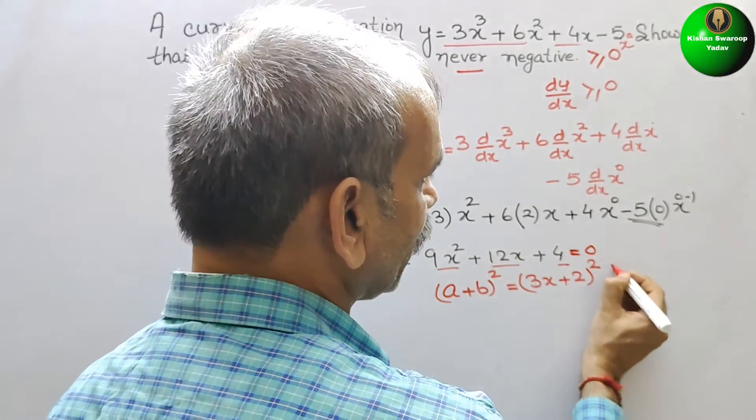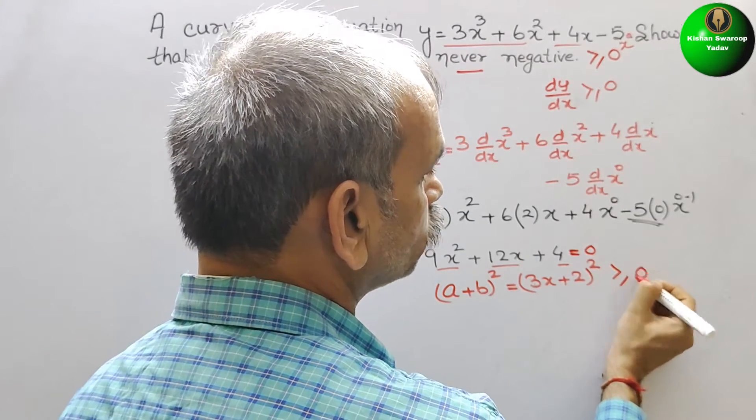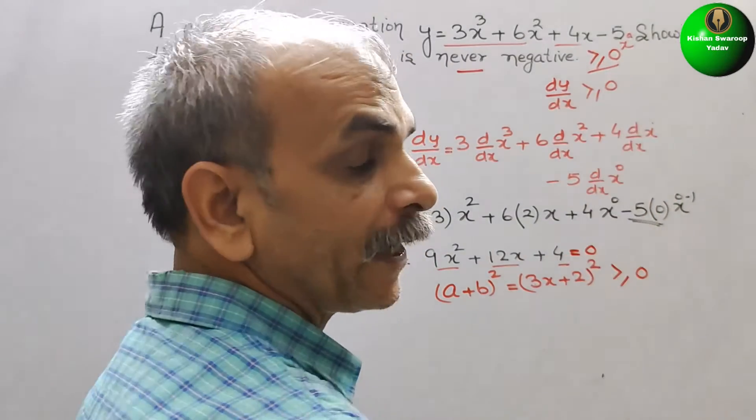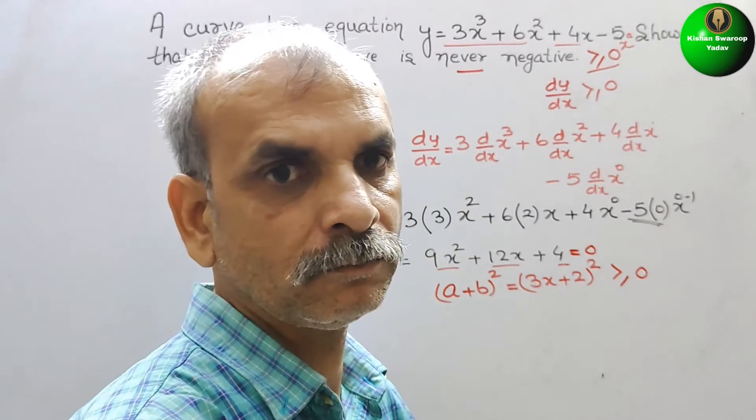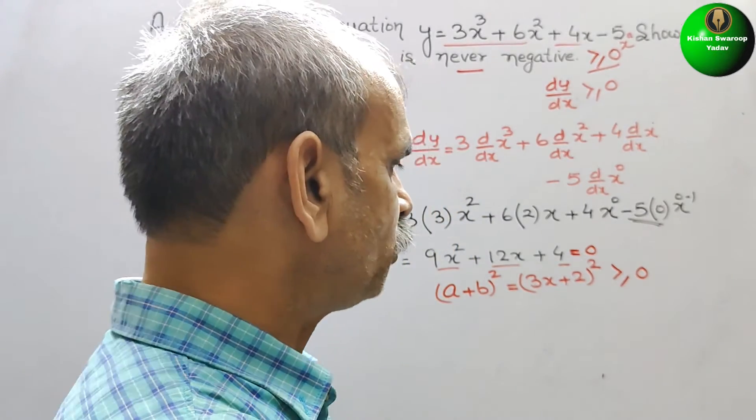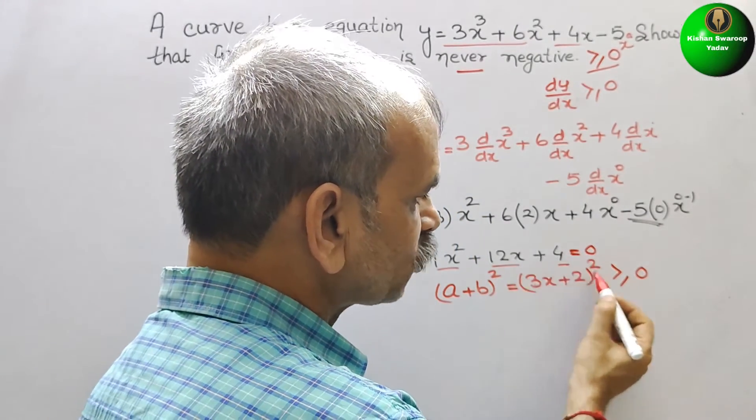It should be greater than or equal to 0, they have told, not negative. So now if you see this is the square.